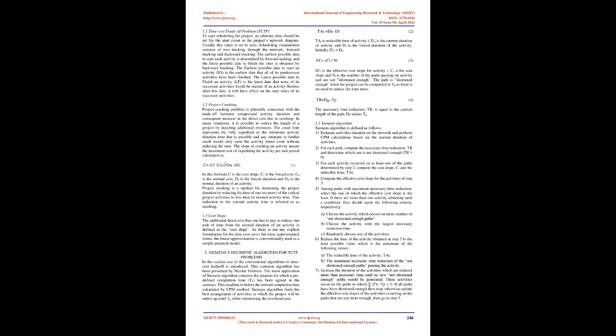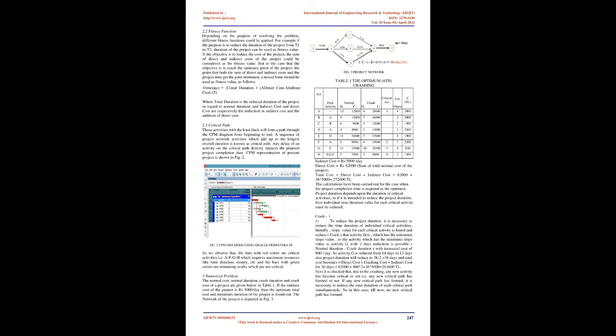The slope of crashing an activity means the increment cost of expediting the activity per unit period, calculated as: C is the cost slope, CF is the forced cost, CN is the normal cost, DF is the forced duration, and DN is the normal duration of an activity. Project crashing is a method for shortening the project duration by reducing the time of one or more critical activities to less than its normal activity time — this reduction is referred to as crashing. The cost slope is the additional direct cost that one must pay to reduce one unit of time from the normal duration of an activity. As there is no explicit formulation for the time-cost curve, the linear approximation is conventionally used as a simple practical model.